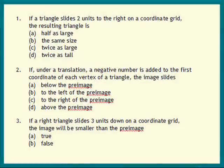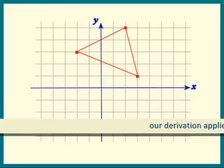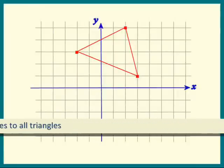What's the third problem? If a right triangle slides three units down, what happens to the image? Does it get smaller? For the triangle to slide down three units, each of its vertices has to slide down three units. So let's just take one at a time and see what happens.